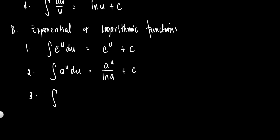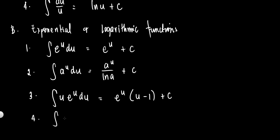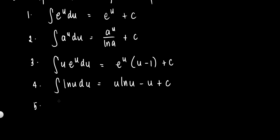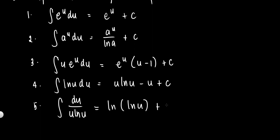Number three: the integral of u times e to the u du is equal to e to the u times (u minus 1) plus c. Number four: the integral of ln of u du is equal to u times ln of u minus u plus c. Number five: the integral of du over (u times ln of u) is equal to ln of u plus c. These five formulas are the formulas for exponential and logarithmic functions.